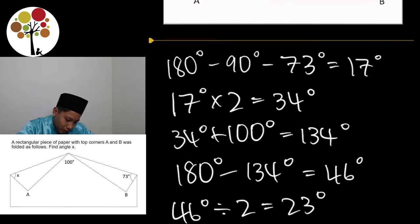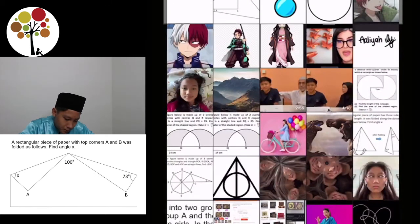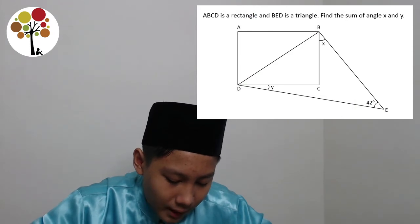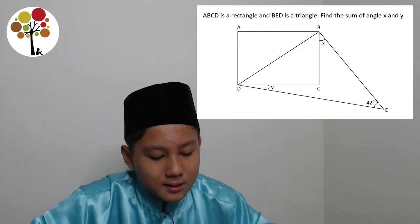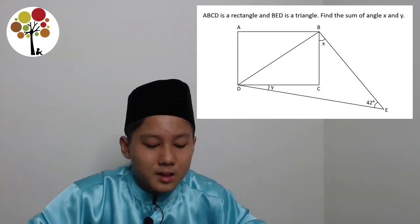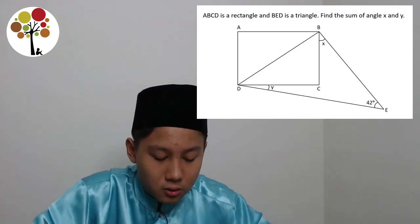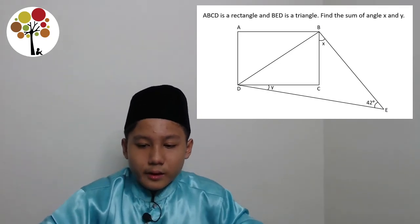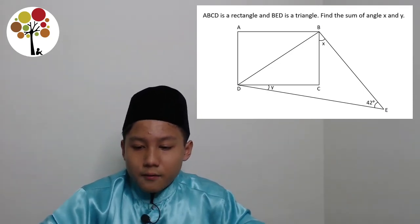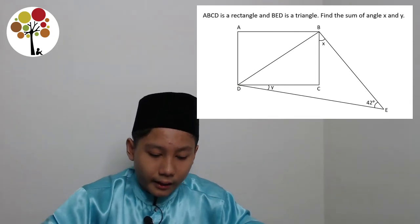Now, we can move on to the second question. Okay. Now, personally, I find this question very interesting because it is actually quite hard to see, but there's actually a shortcut and I'll explain it to you shortly. So, the question. ABCD is a rectangle and BED is a triangle. Find the sum of angle x and angle y.